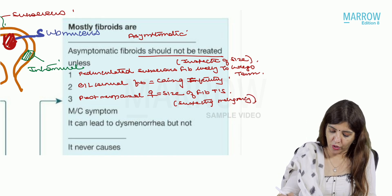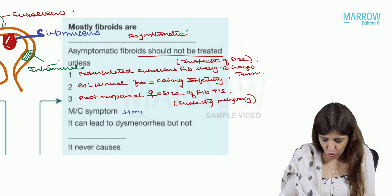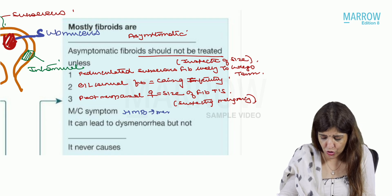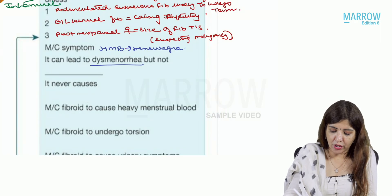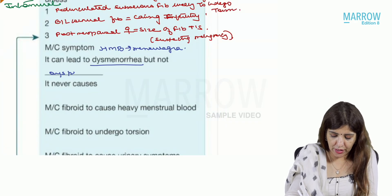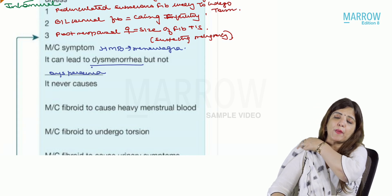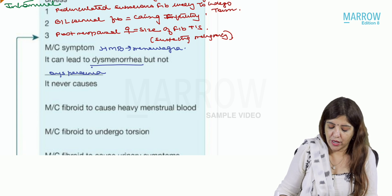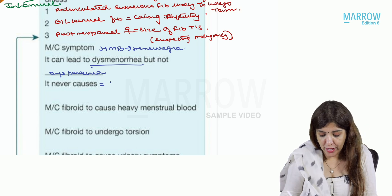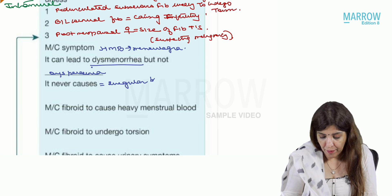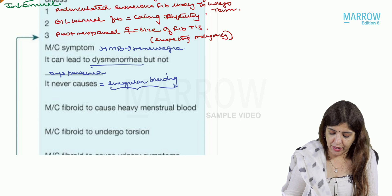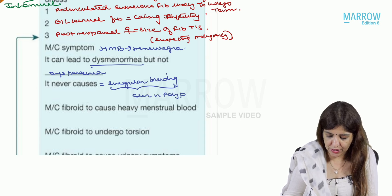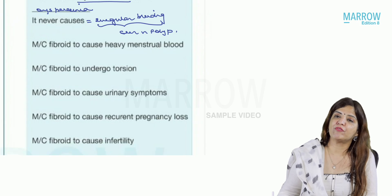The most common symptom in a fibroid is heavy menstrual bleeding, called menorrhagia. A fibroid can lead to dysmenorrhea but will never lead to dyspareunia — if you get both dysmenorrhea and dyspareunia, always think about endometriosis. A fibroid never causes irregular bleeding (metrorrhagia); irregular bleeding is seen in polyps, not in fibroid.